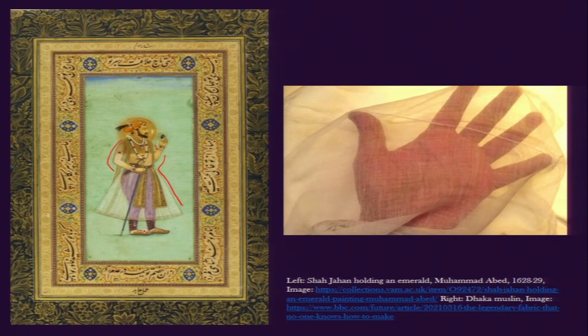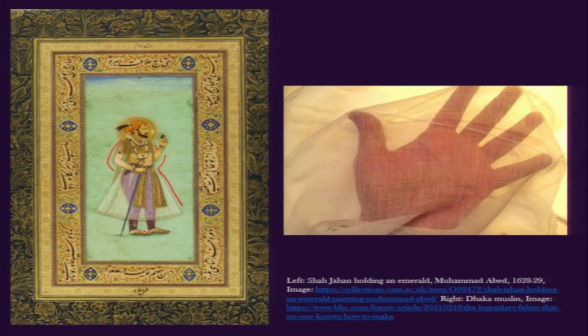This sheer, diaphanous quality of the fabric is something we find in this portrait, achievable only because of this kind of muslin. On the right side of the screen we can see that if a hand is passed through a layer of muslin cloth, the hand with its color is revealed through it — and a similar character is found in this miniature painting made more than 300 years ago, exemplifying the sheer, diaphanous nature of the fabric.